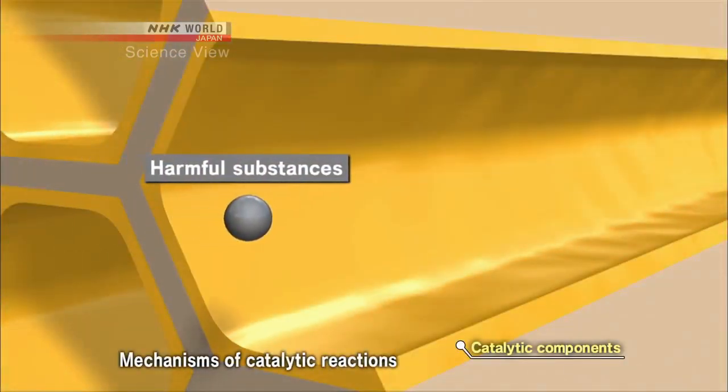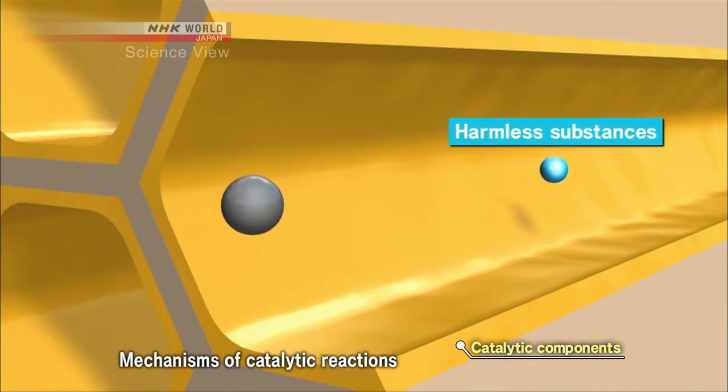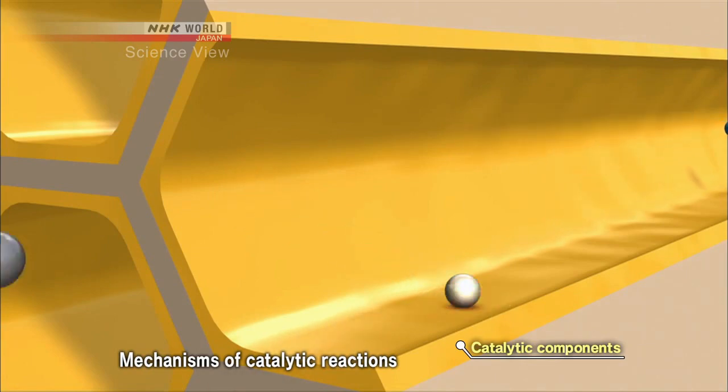As the toxic substances contained in the exhaust gas come in contact with the catalyst, it causes a chemical reaction which converts the toxic gas into harmless substances.